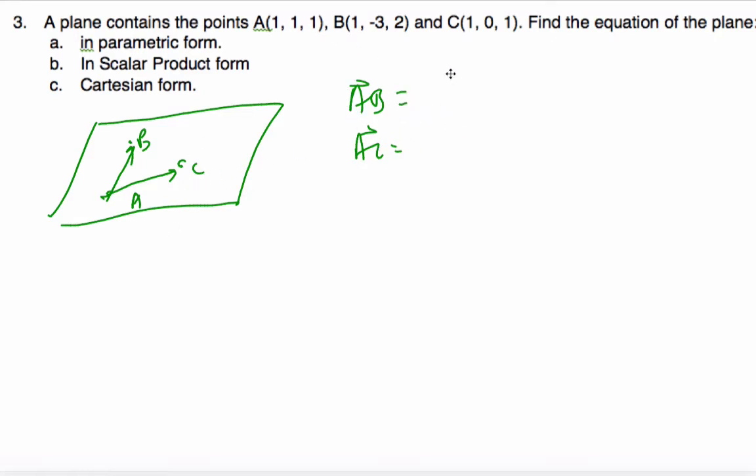So if I go 1 take away 1, I get 0. Negative 3 take away 1, I get negative 4. 2 take away 1 is 1. AC, similarly, 1 take away 1 is 0. 0 take away 1, negative 1. 1 take away 1 is 0. And so here are my two direction vectors.